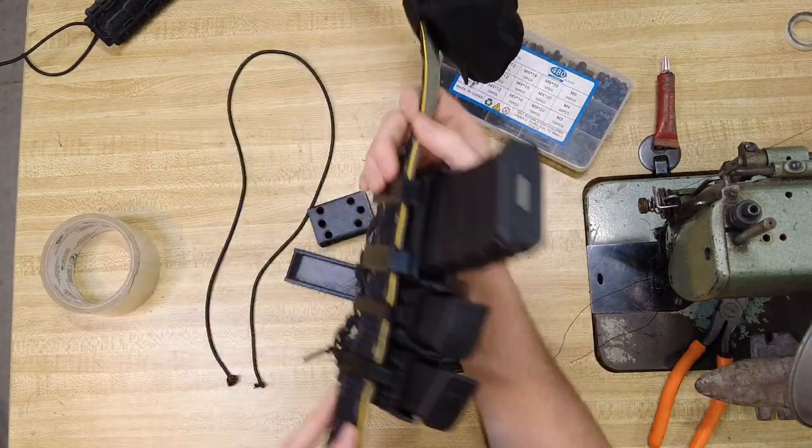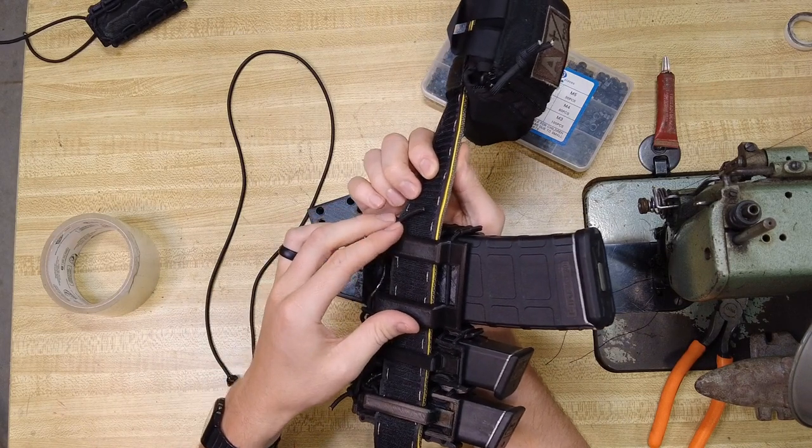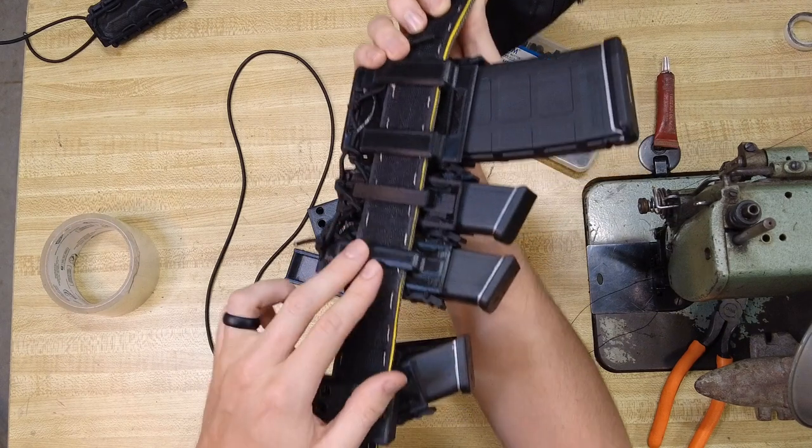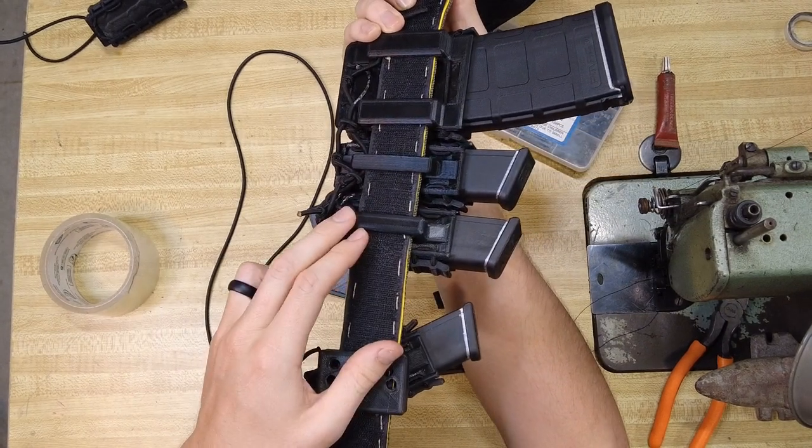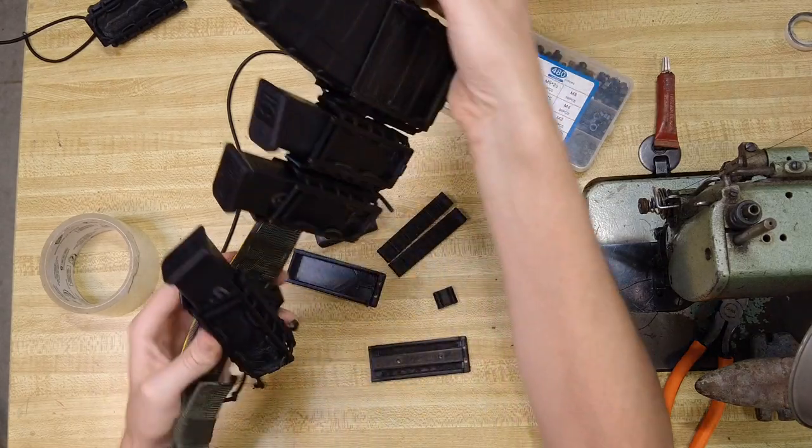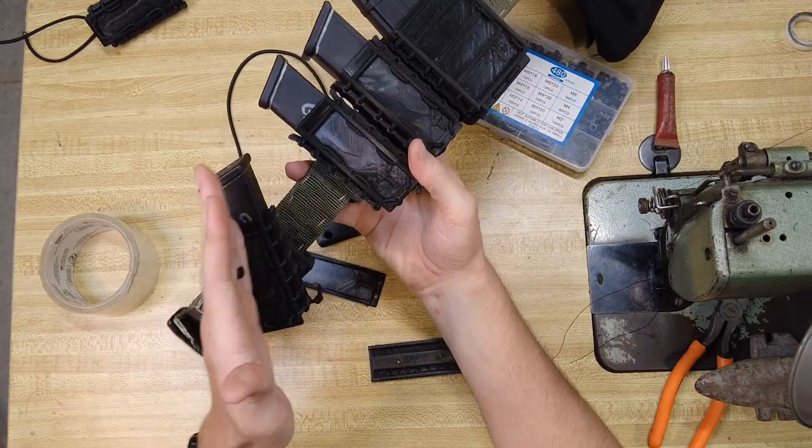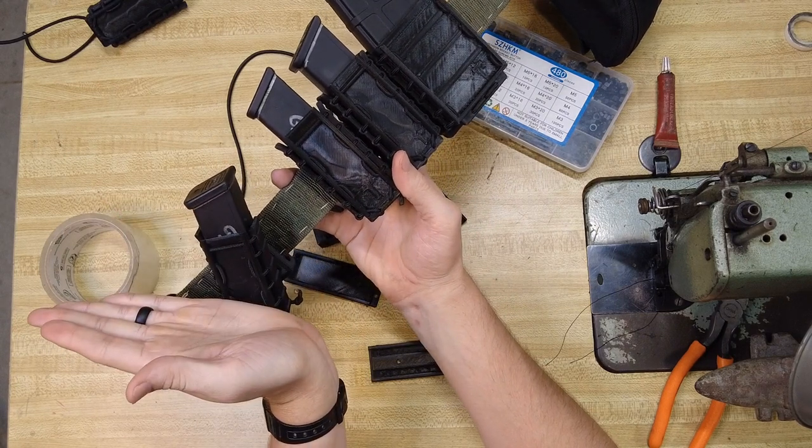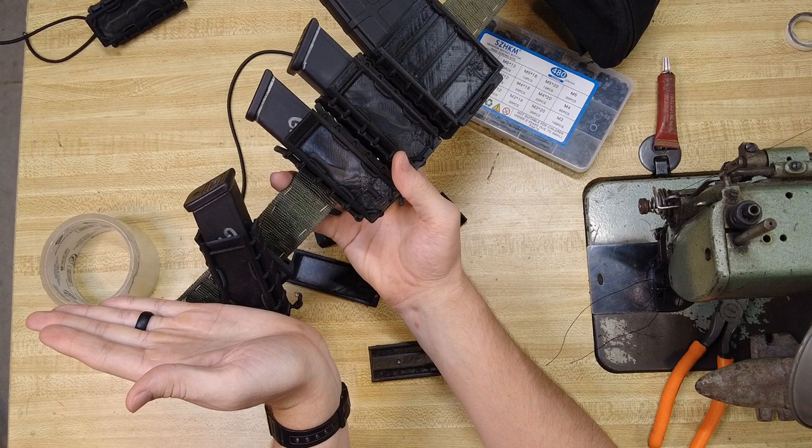You have just your standard rifle mag which has two belt loops on the back that you can thread your belt through. You have the pistol one that just has the single belt loop you can thread your belt through, or you have the pistol that has the adjustable belt loop. The adjustable belt loop one allows you to angle the pistol mag from this angle all the way to vertical and then all the way over here to this other extreme for the lefties.